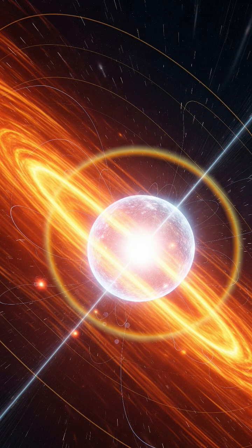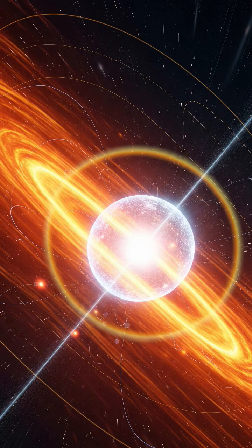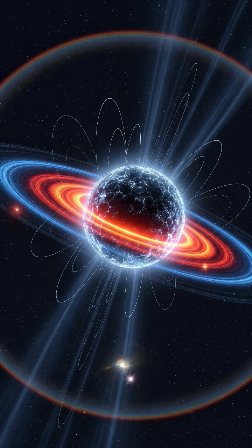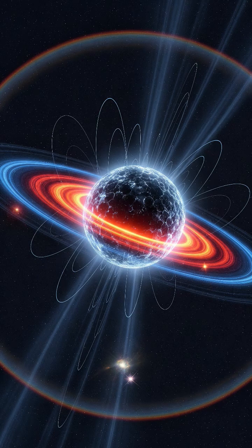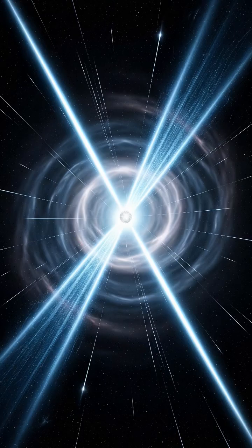A neutron star packs the mass of our sun into a sphere barely 20 kilometers wide. Its gravity is so strong that even atoms collapse. Electrons and protons merge into neutrons, forming a solid ball of pure nuclear matter.